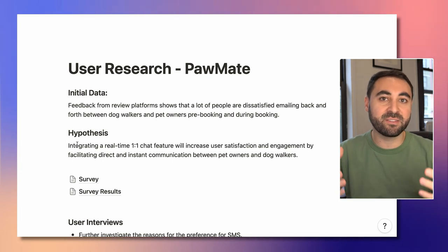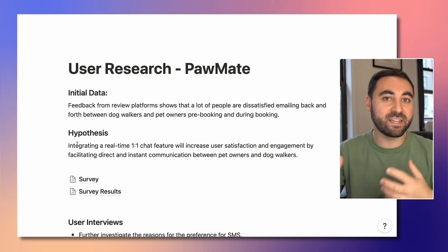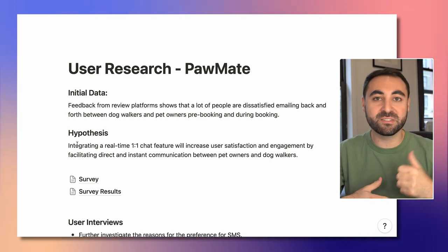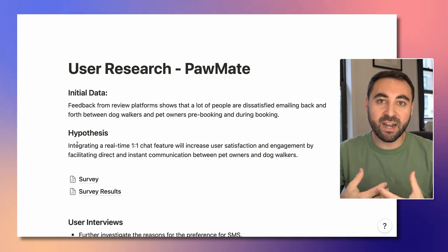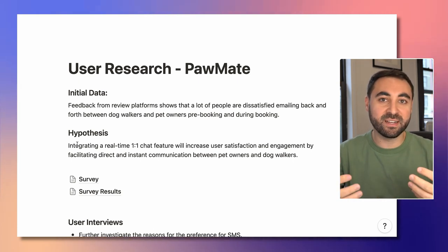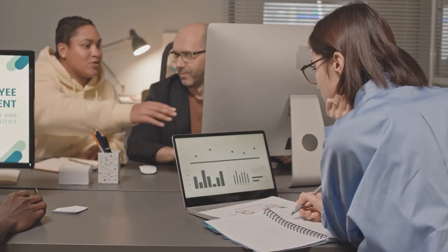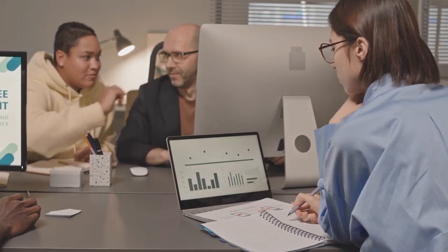We want to think about the hypothesis we have and then either validate or invalidate it through different methodologies — whether it's surveys, interviews, card sorts, usability tests, prototypes, etc. One final tip: if you're going to be doing user research, go into it without strong biases. Really be open to learning what users actually want. None of us can see into the future or into the brains of our users. All we can do is gather more and more evidence — data, quotes, etc. — from users to learn more about their preferences.